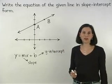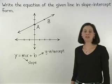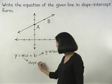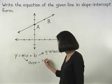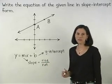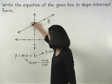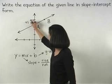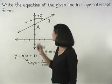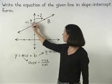So our first step is to find the slope and y-intercept of the given line. To find the slope, remember that we use the ratio rise over run between any two points on the line. Notice that to get from point A to point B along this line, we rise one unit and run two units. So our slope, or rise over run, is one over two.